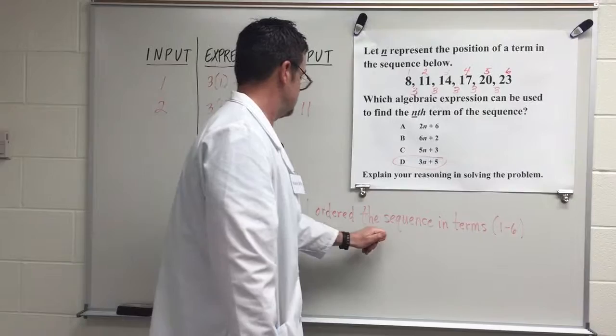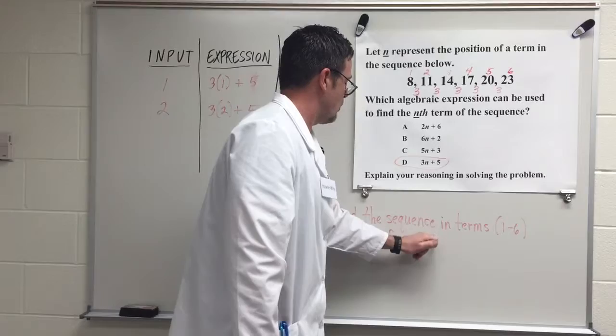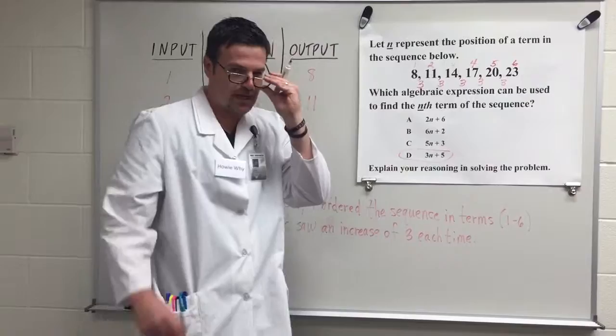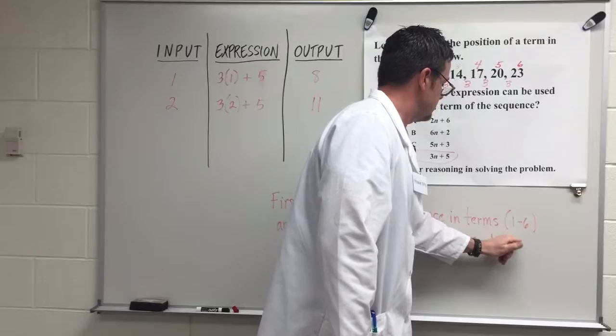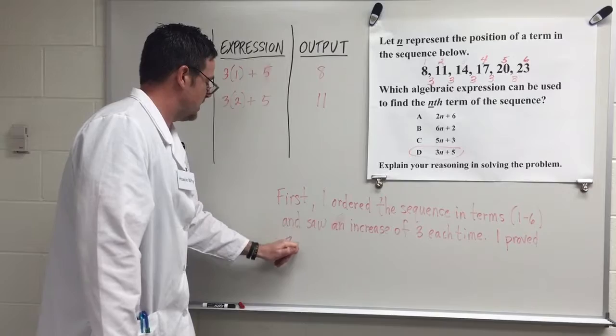But also, I need to explain why I got the problem I did. Which basically, here's how I proved my answer. The why part. I proved my answer. I proved 3N plus 5 by building the chart.